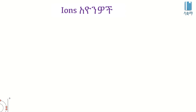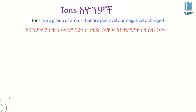I'm going to introduce you to ions. Ions are a group of atoms that are positively or negatively charged. Ion has positive and negative charge.